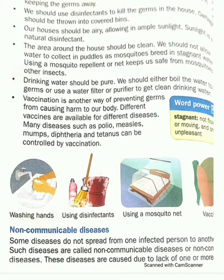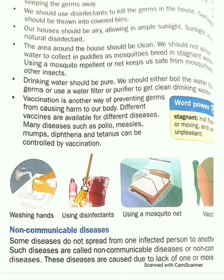Drinking water should be pure. We can use RO water, which is germ-free. If a purifier or filter is not available, we can boil water to kill germs. It is better to use water filters or purifiers for clean drinking water. We can also add chlorine tablets for chlorination, which will make the water disinfectant.